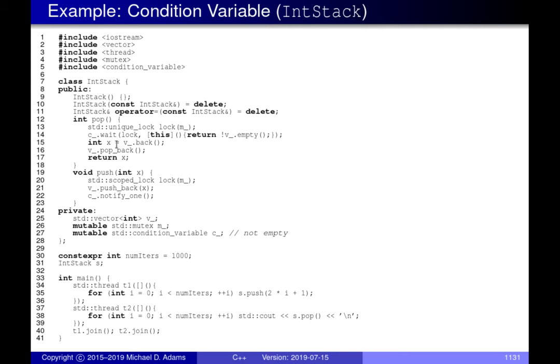When we come out of wait, the mutex has been reacquired for us — wait atomically releases it on entry and reacquires it on exit. So we're still safe to access the vector. We then read the last element using the vector's back() member function, pop that element off the stack, and return the value.